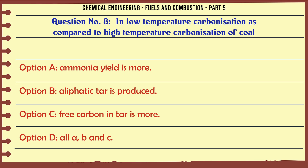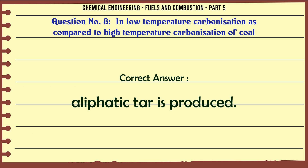In low temperature carbonization as compared to high temperature carbonization of coal: A. Ammonia yield is more. B. Aliphatic tar is produced. C. Free carbon in tar is more. D. All A, B and C. The correct answer is aliphatic tar is produced.